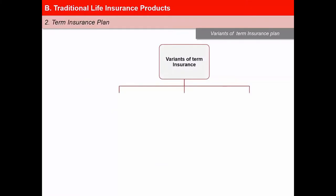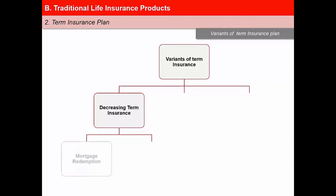There are a number of variants of term insurance plans. Decreasing term insurance: the death benefit decreases in amount with the term of coverage, while the premium payable each year remains at level. Decreasing term insurance plans have been marketed as mortgage redemption and credit life insurance. Mortgage redemption is a plan designed to provide a death amount that corresponds to the decreasing amount owed on a mortgage loan, whereas credit life insurance is designed to pay the balance due on a loan if the borrower dies before the loan is repaid.